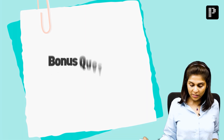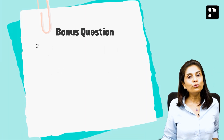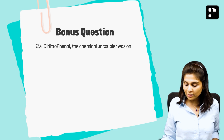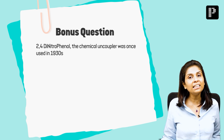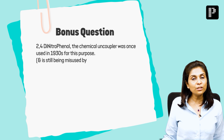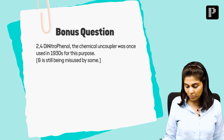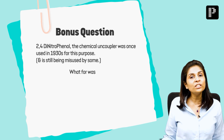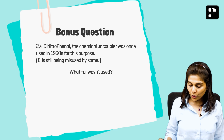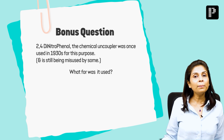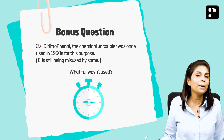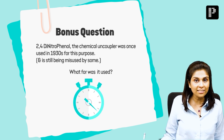Now for the bonus question: 2,4-dinitrophenol, the chemical uncoupler, was once used in the 1930s for a specific purpose and is still being misused by some. What was it used for? I already gave you the clue — what do you think an uncoupler can be used for? Give yourself 30 seconds and come back with the right answer.